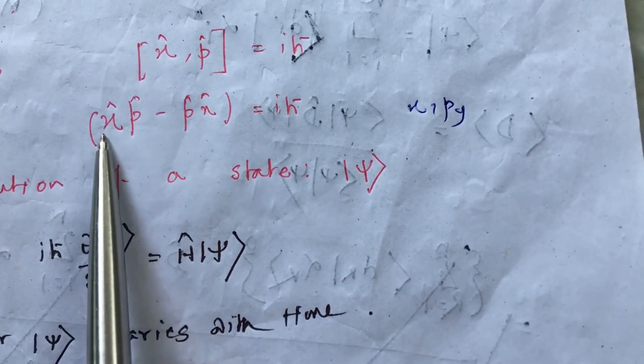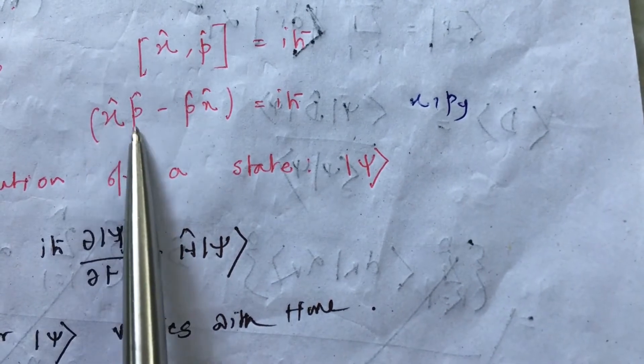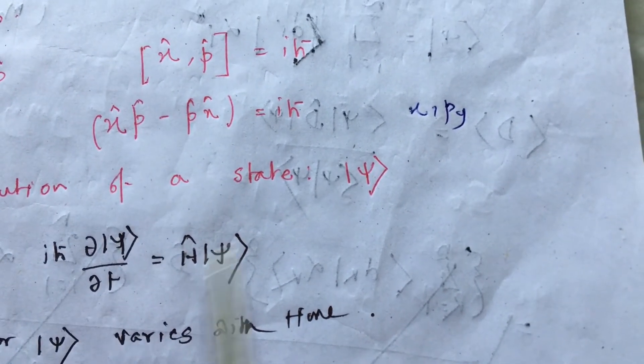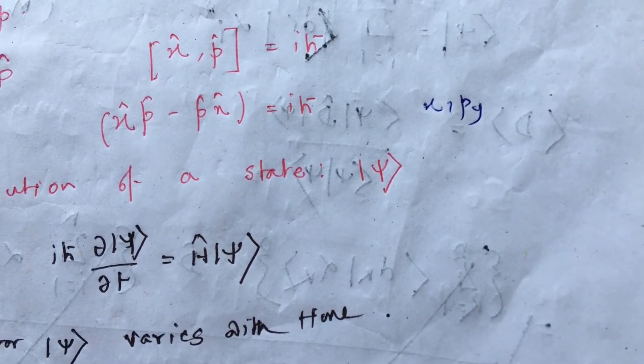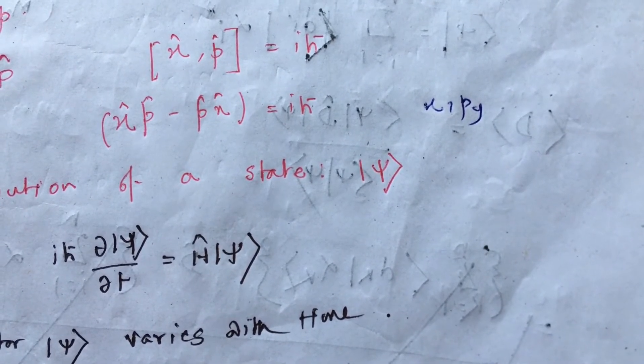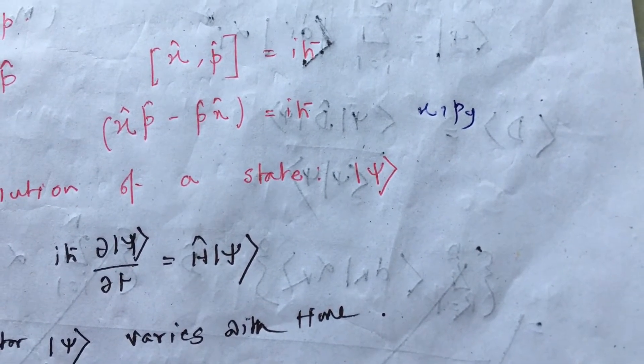We can measure, rather, to be precise, we can't measure x and px at the same time. We can measure x and py at the same time. We can measure x and pz at the same time. We can measure z and px at the same time, but not z and pz.